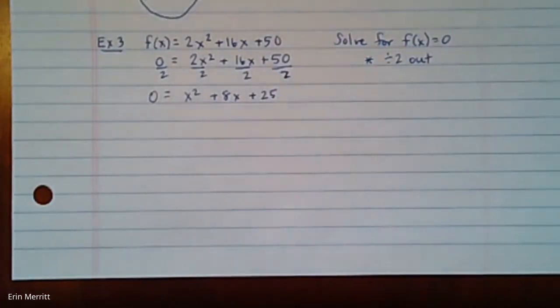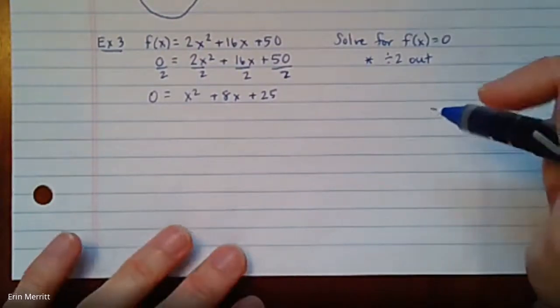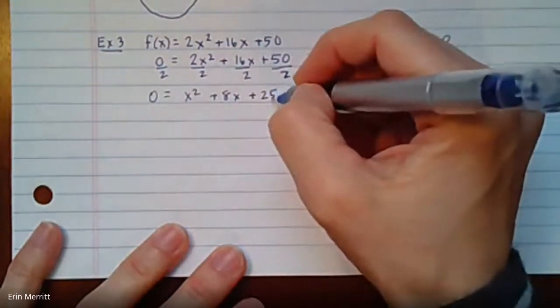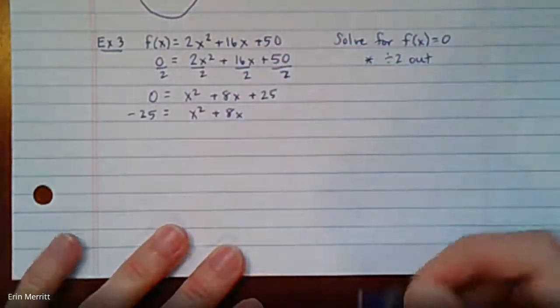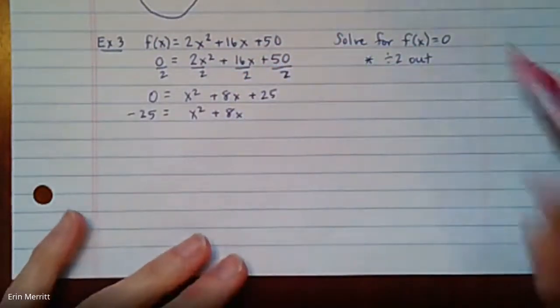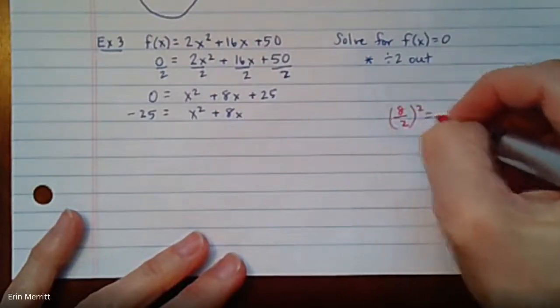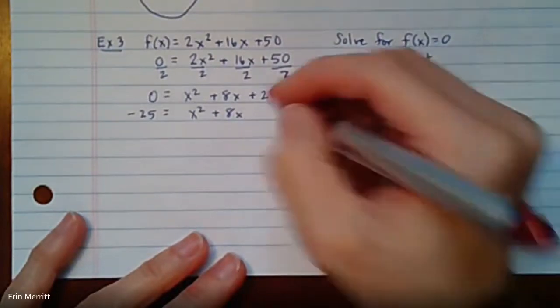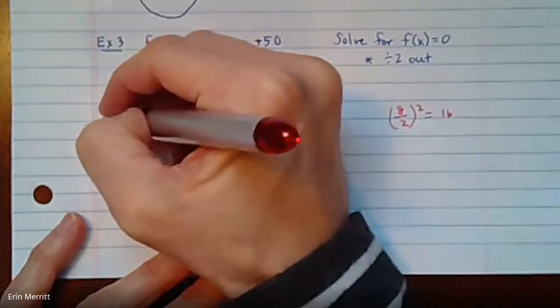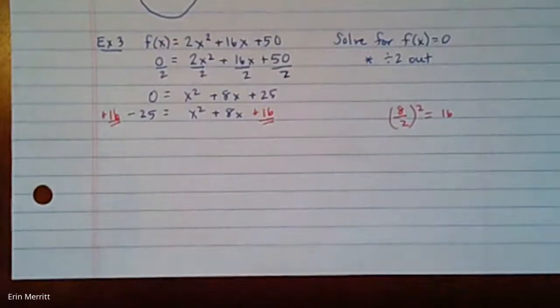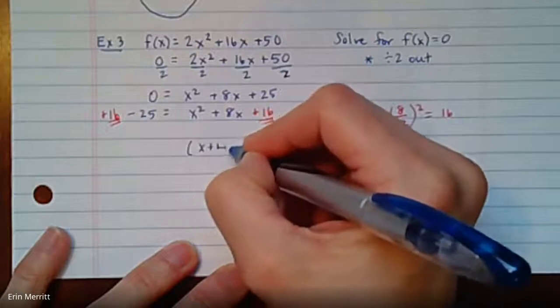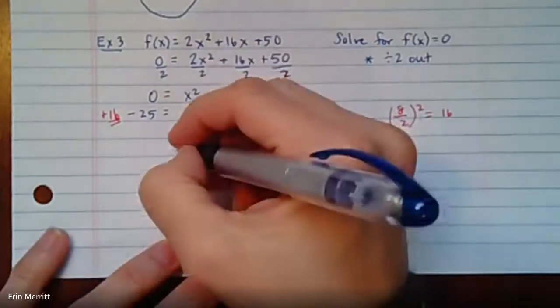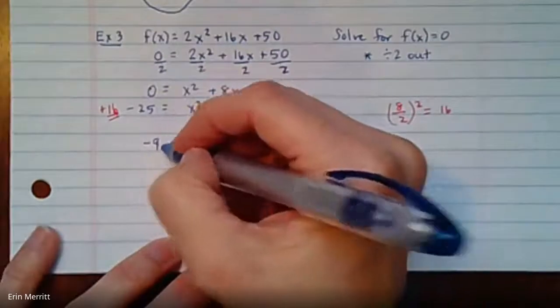We end up with 0 equals x squared plus 8x plus 25. That 2 essentially is a vertical stretch but it's not going to affect our roots here. If we now do completing the square, subtract the 25 over so that we get x squared plus 8x. Cut it in half and square it. That's going to be 4 squared or 16. I'm going to add 16 to one side and then balance it by adding it to the other side. This is going to give me x plus 4 times x plus 4, or x plus 4 squared. On the other side, 16 minus 25 gives me negative 9.